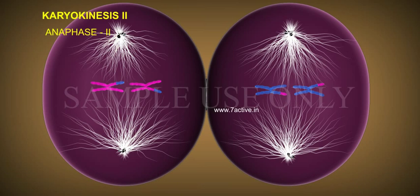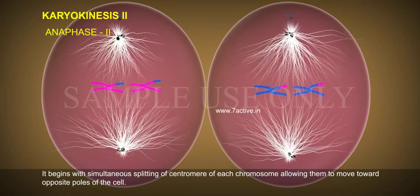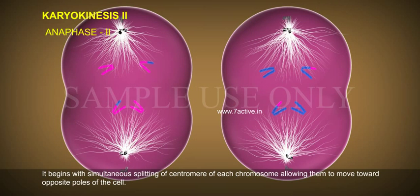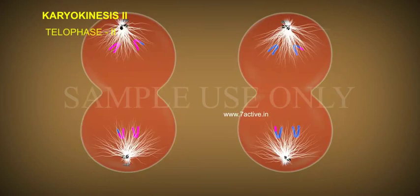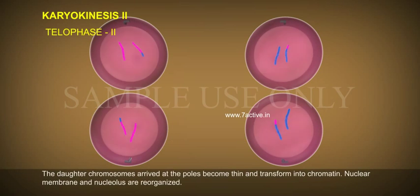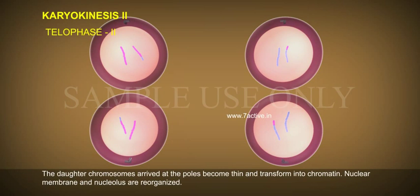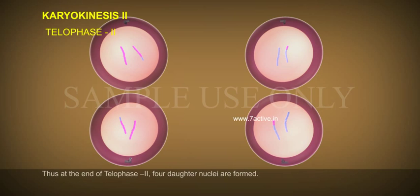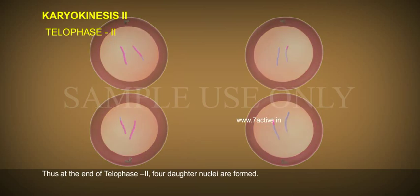Anaphase 2. It begins with simultaneous splitting of the centromere of each chromosome, allowing them to move toward opposite poles of the cell. Telophase 2. The daughter chromosomes arrive at the poles, become thin and transform into chromatin. Nuclear membrane and nucleolus are reformed. Thus, at the end of telophase 2, four daughter nuclei are formed.